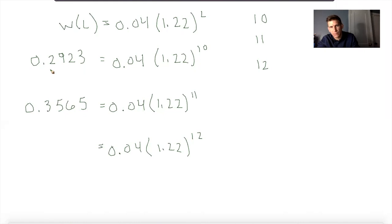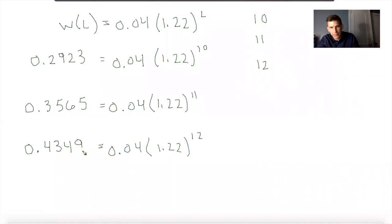Plugging into the calculator: 1.22 to the 10th times 0.04 gives me 0.2923. Then 1.22 to the 11th times 0.04 gives me 0.3565. I'm going to the fourth decimal each time to keep them accurate. I like the fact that the numbers are increasing, because I'm leaning toward the idea that these are all going to represent a 22% increase.